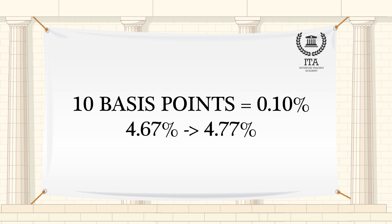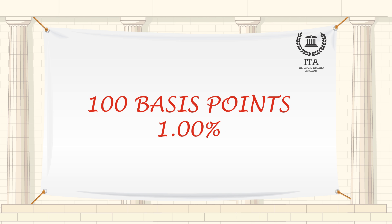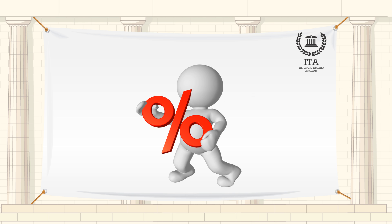For example, a 4.67% rate increases by 10 basis points to 4.77%. In other words, an increase of 100 basis points means a rise by 1%. Like percentage points, basis points avoid the ambiguity between relative and absolute discussions about interest rates by dealing only with the absolute change in numeric value of a rate.